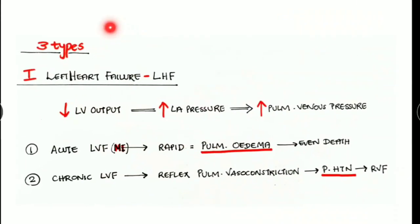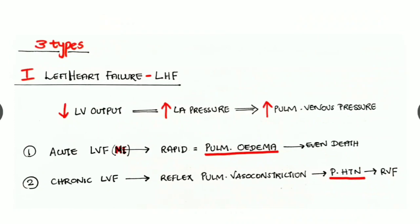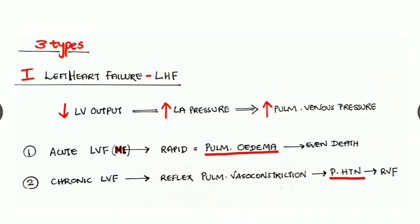The first type is left heart failure. There is reduced left ventricular output, which causes increased left atrial pressure, which in turn increases the pulmonary venous pressure.